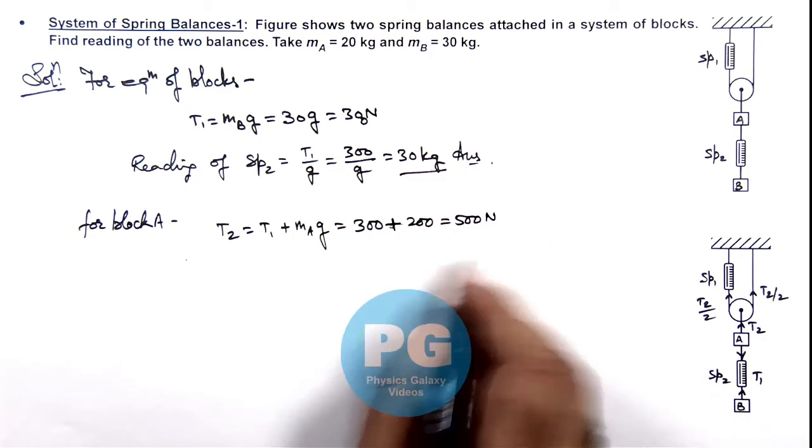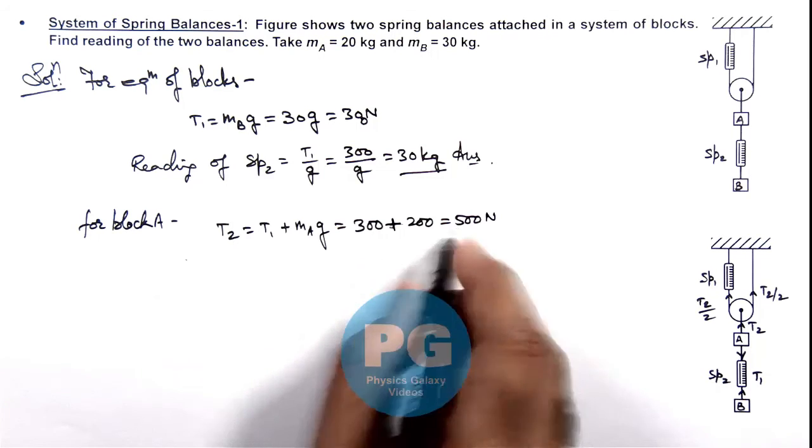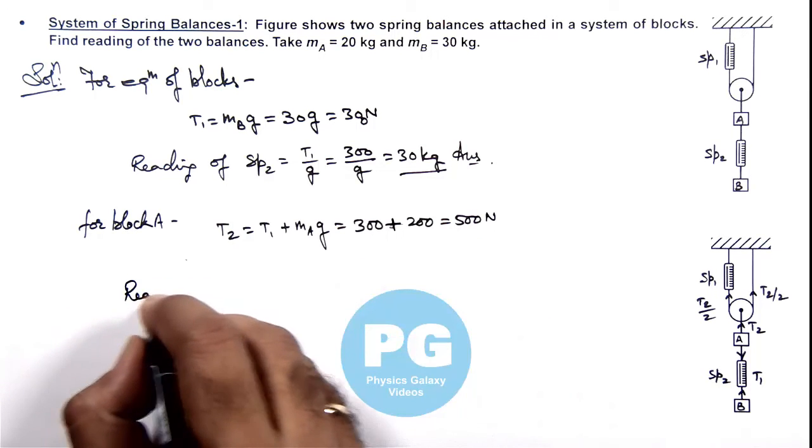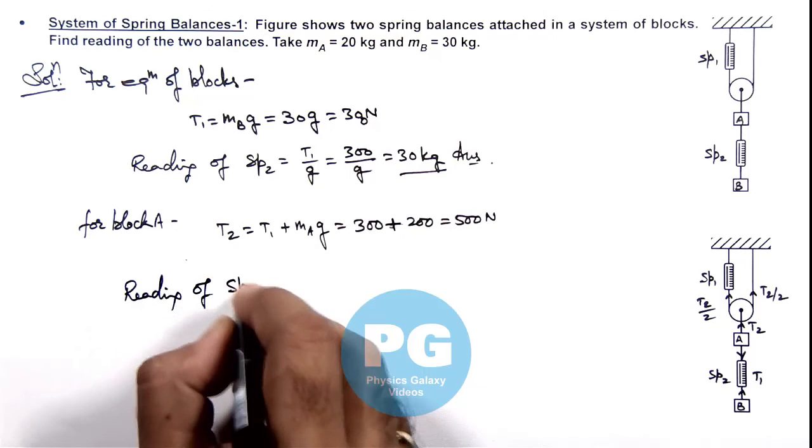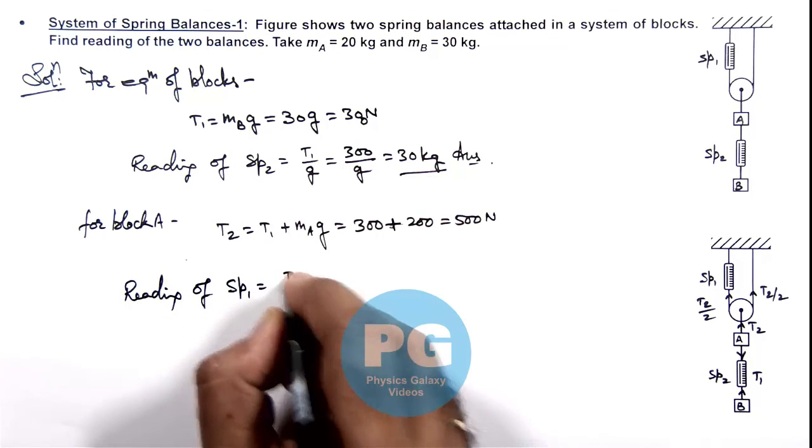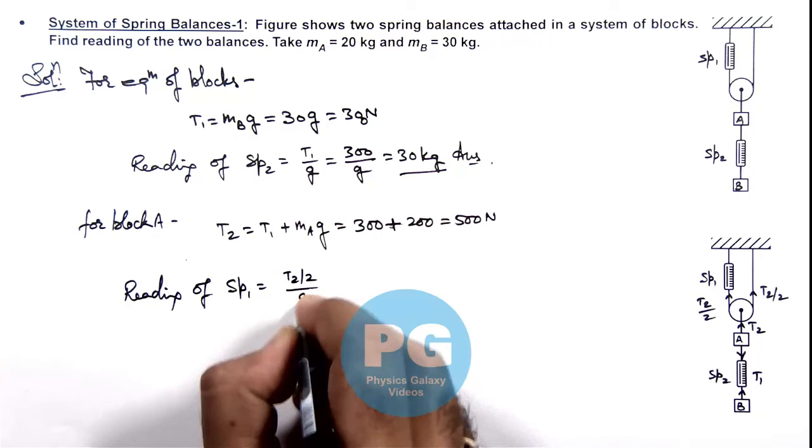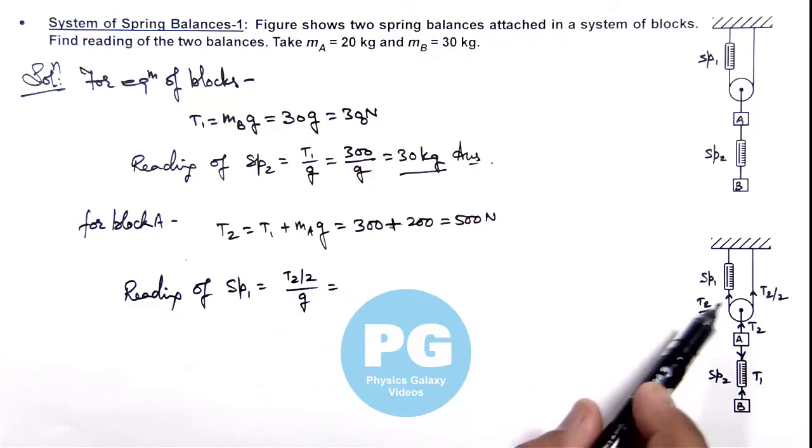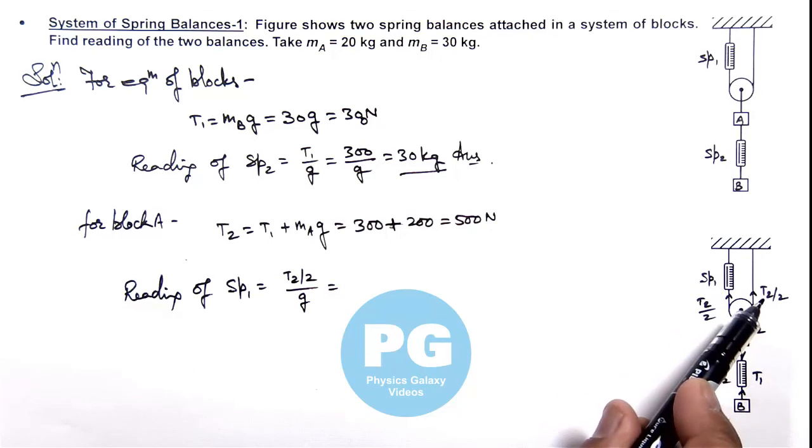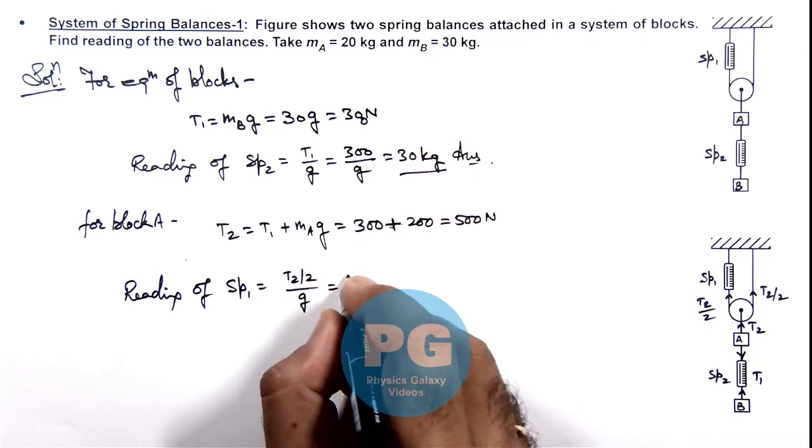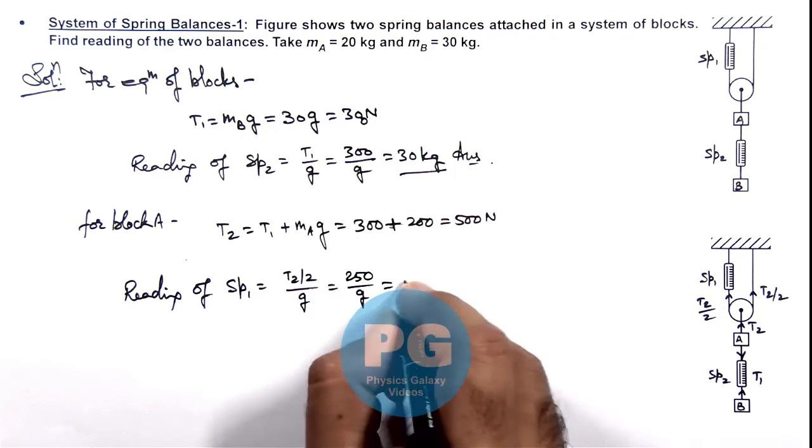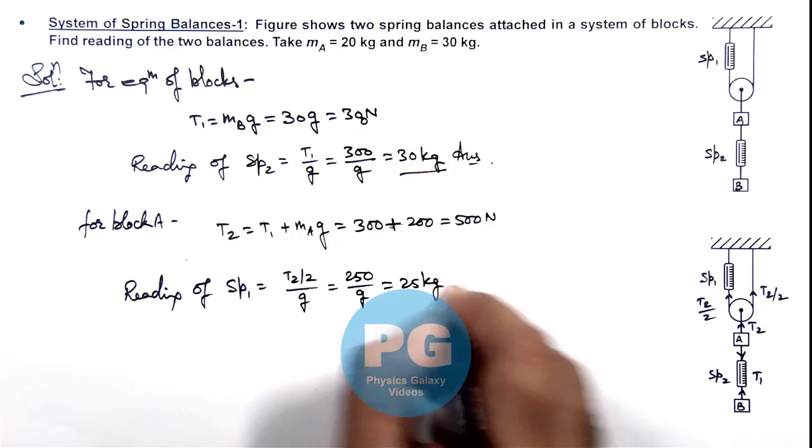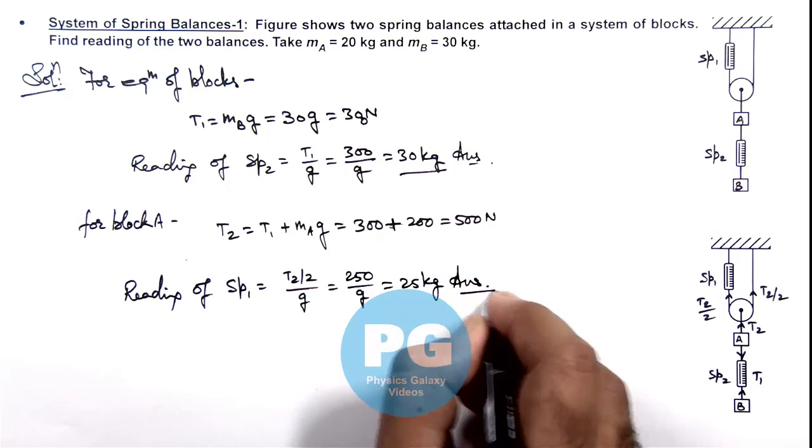So in this situation T2 is 500 newton so we can directly get the reading of SP1, which is T2 by 2 by g because the string in which SP1 is connected the tension is T2 by 2. So this will be 250 by g that is equal to 25 kilogram, and that will be another result of the problem.